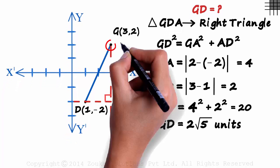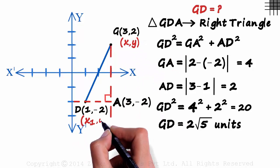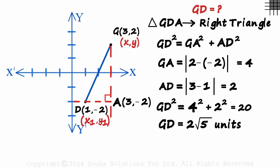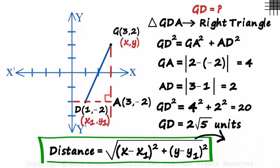Let's say G is X comma Y and D is X1 comma Y1. We can say that the distance between two points with these coordinates will be the square root of X minus X1 squared plus Y minus Y1 squared. This is the distance formula. To find the distance between any two points, all we need is the coordinates of those two points.